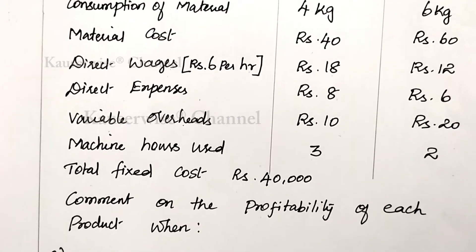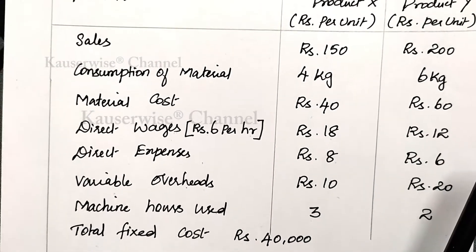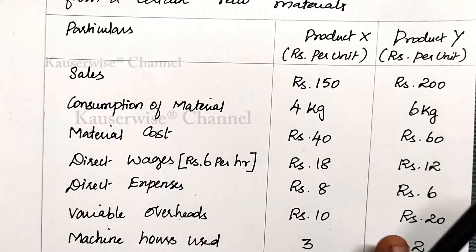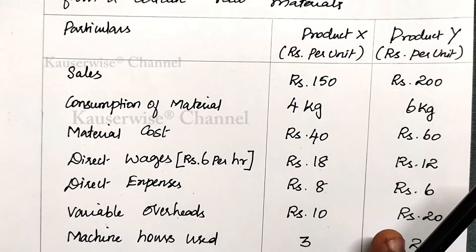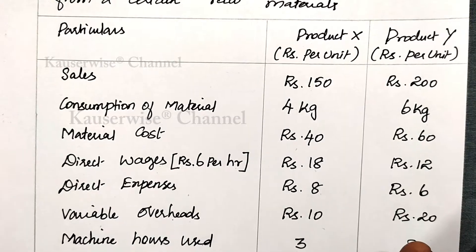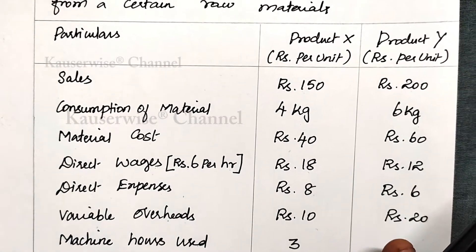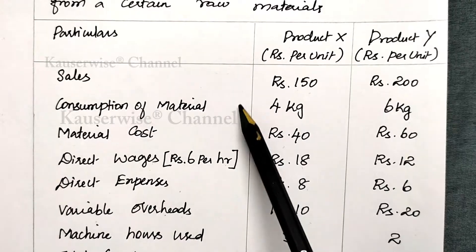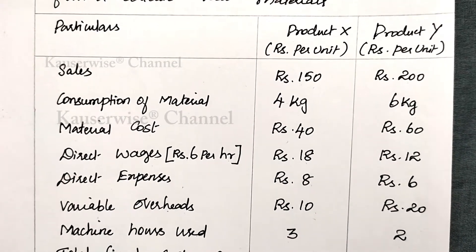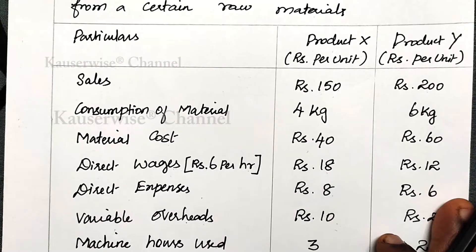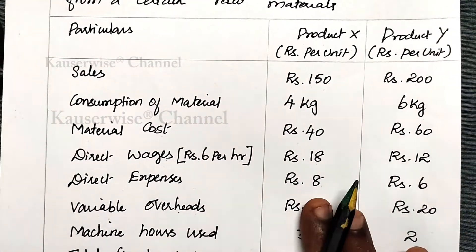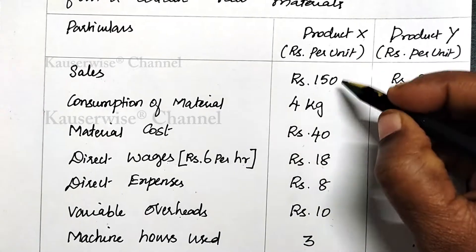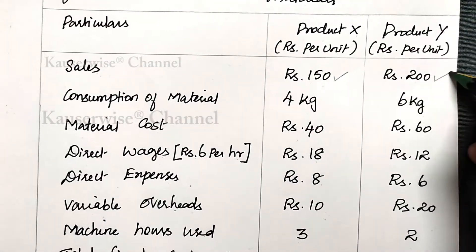In order to find out the profitability of two different products, we need to follow two steps. Number one, we need to calculate contribution per unit. Profitability depends on contribution. The formula for contribution per unit is selling price per unit minus total variable cost per unit. I am going to calculate contribution per unit for X and Y.